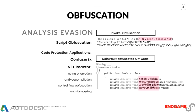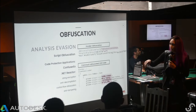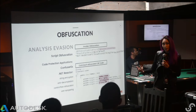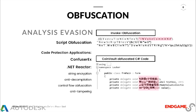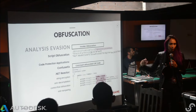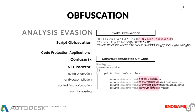PowerShell is also known for obfuscation in some of these attacks. Invoke-Obfuscation was made by an offensive security researcher — you can see the invoke command broken into a whole bunch of different concatenated strings. Even in CoinVault, when you decompile the binary and get the C# code, you can see they use different types of characters to change the actual names of the functions. On top of that, there are code protection applications like ConfuserX or Confuser — actually used in CoinVault — and then .NET Reactor, the commercial version, which comes with string encryption, anti-decompilation, control flow obfuscation, and anti-tampering.